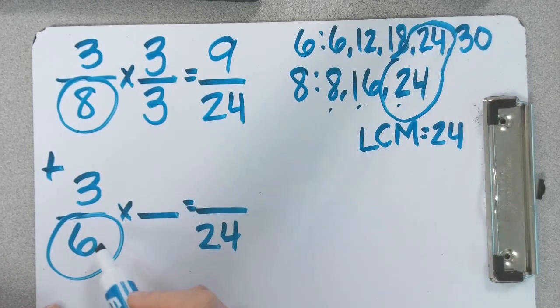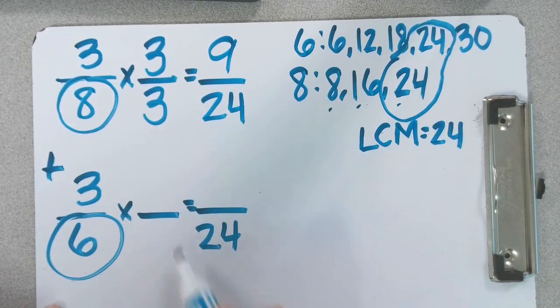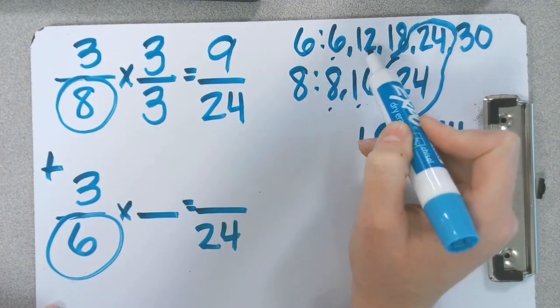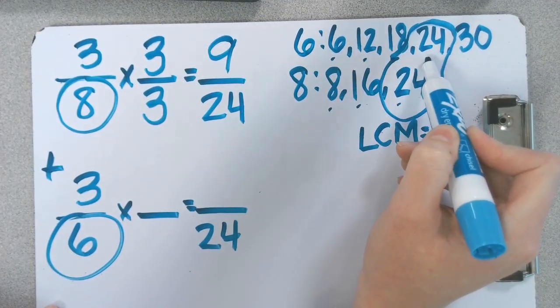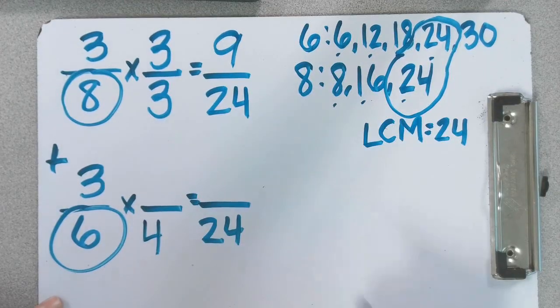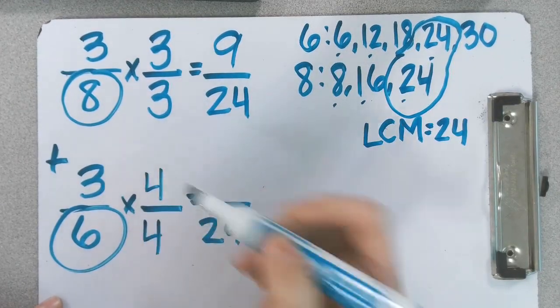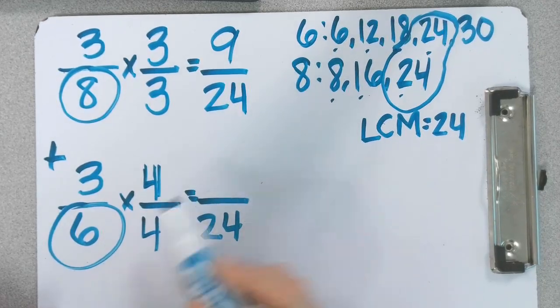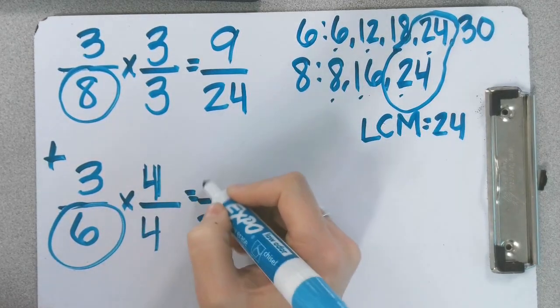Now, 6 times something is going to give us 24. If we don't know, we go to our multiples: 1, 2, 3, 4. So 6 times 4 is equal to 24, which means we have to multiply the entire fraction by 4 fourths. 3 times 4 is 12.